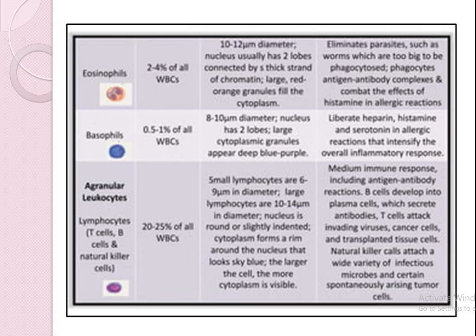Eosinophils are present at 2 to 4 percent of all WBCs. Their size is 10 to 12 micrometers in diameter. They eliminate parasites such as worms and are also involved in the phagocytosis process.